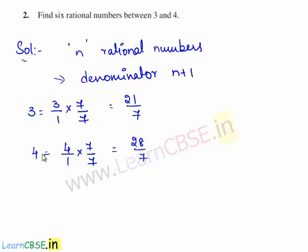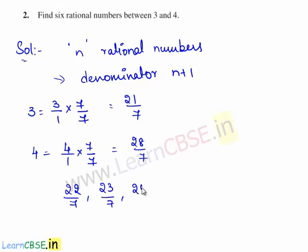Therefore, the 6 rational numbers between 3 and 4 are 22 by 7, 23 by 7, 24 by 7, 25 by 7, 26 by 7, and 27 by 7.